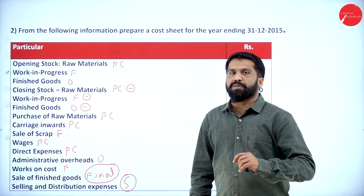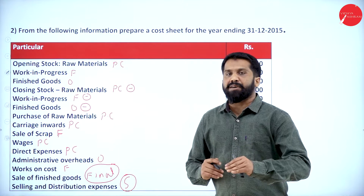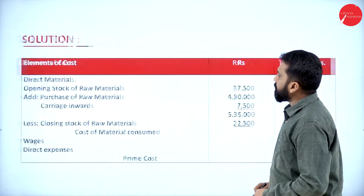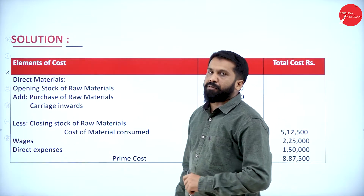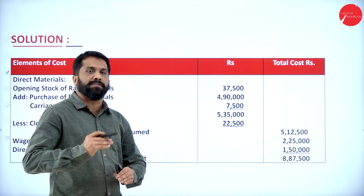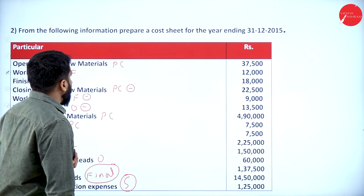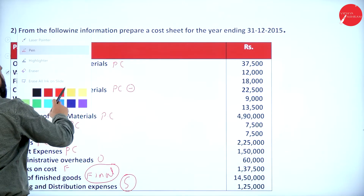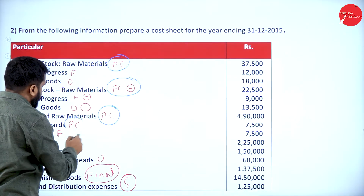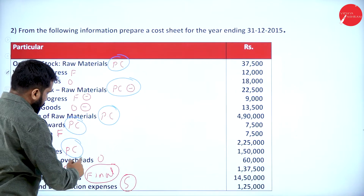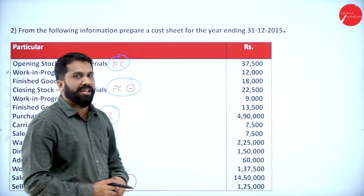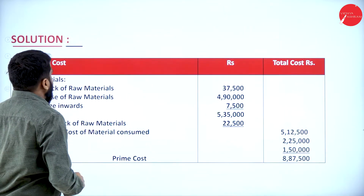We'll solve it step by step: first prime cost, then factory, then office, and finally selling and distribution. For prime cost, there are five components in total under direct material.